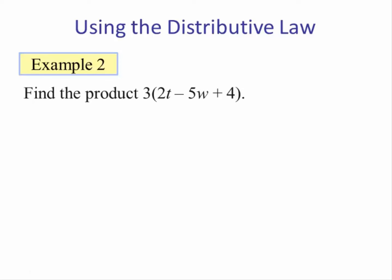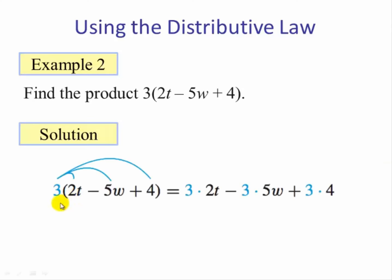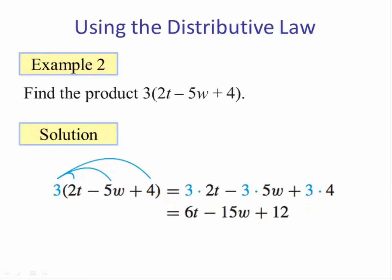Example two: find the product of three times the quantity two t minus five w plus four. This time we have three terms, so we distribute the three to each. We get three times two t, minus three times five w, plus three times four. This becomes six t minus fifteen w plus twelve.